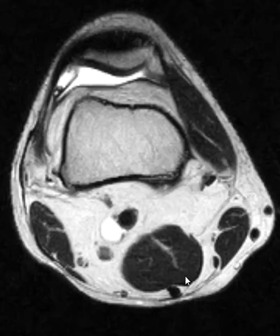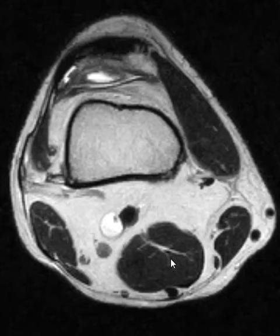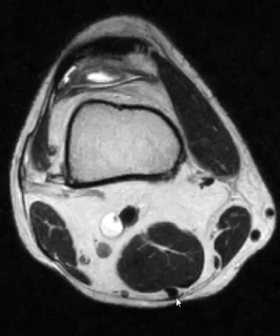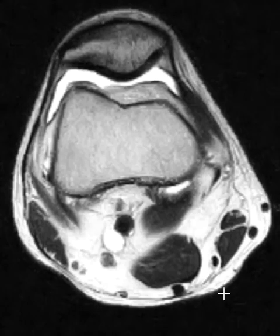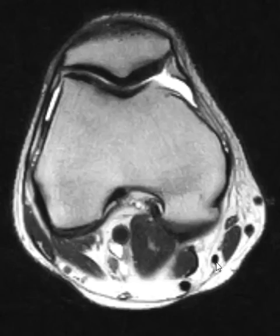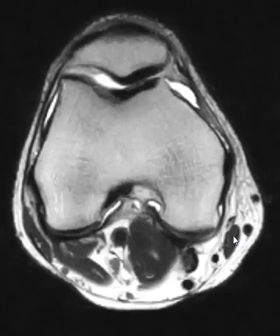Now, behind the semimembranosis, it's easy to identify the next PES-anserine tendon — this is the semitendinosus. The semimembranosis and semitendinosus sound similar and are intimately related; they come off the ischial tuberosity right next to each other, so it makes sense they'd be together down here. Here is the semitendinosus, and the next one over is the gracilis tendon.